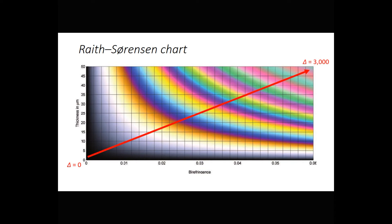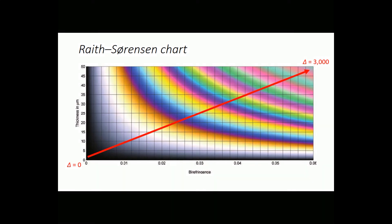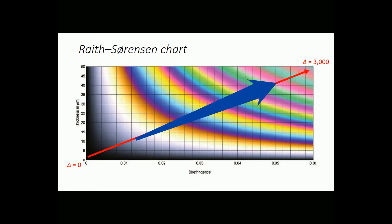Interference colors vary in hue and intensity with stage rotation, so we only see these colors if we rotate the stage and look for maximum interference colors. We also need to look at multiple grains of the same mineral, because some of them could be oriented wrong so they don't show much interference color at all. Grains that are very thin or that have very low birefringence will only show black, gray, or white colors. Grains that are a little bit thicker will begin to show yellows and pinks and blues, and the colors repeat as retardation increases. Overall, the colors become less pronounced as retardation goes to greater and greater values.